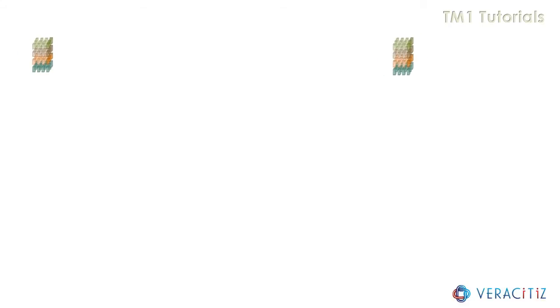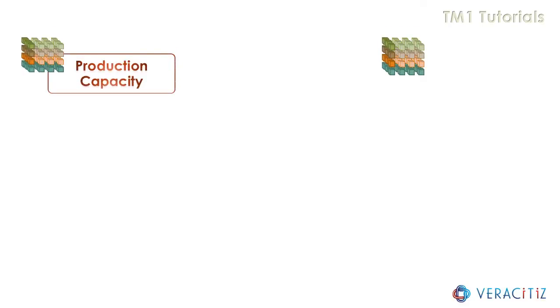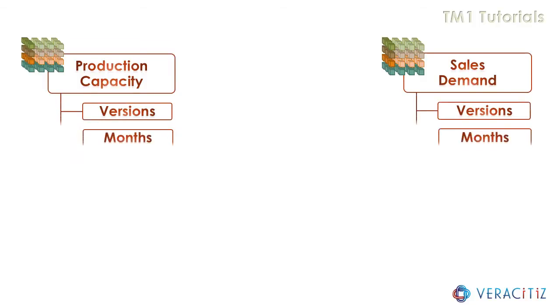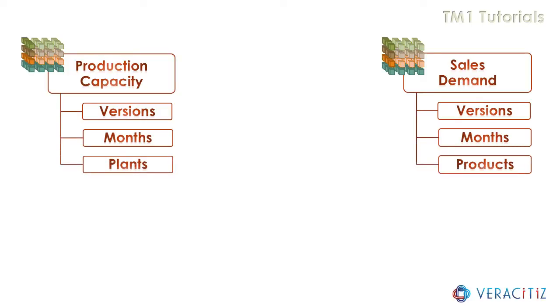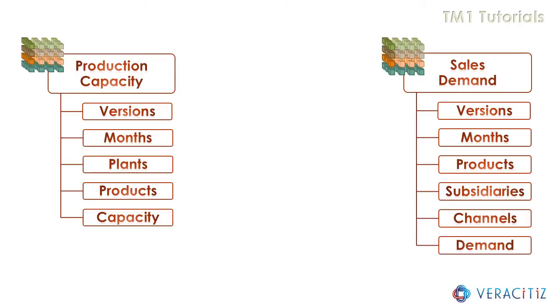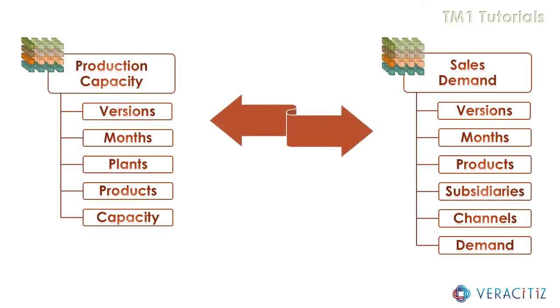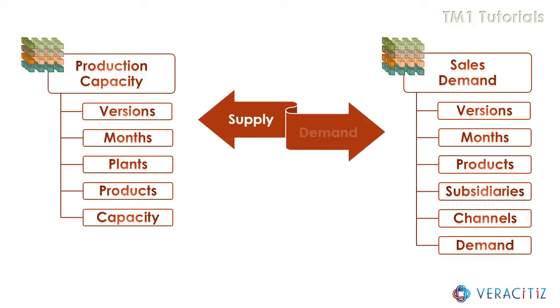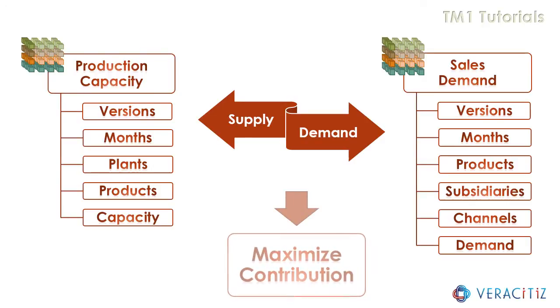Quite often, most of the business units are bound by two principal constraints. First is the production capacity, and second is sales demand. The major attributes influencing these two constraints are version, month, plant, product, subsidiary, and channel. Our objective is to derive optimal allocations subjected to supply and demand constraints, which in turn will provide maximum contribution at the organizational level.